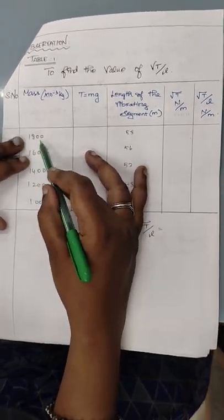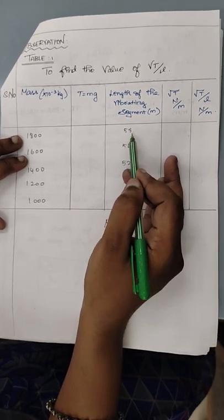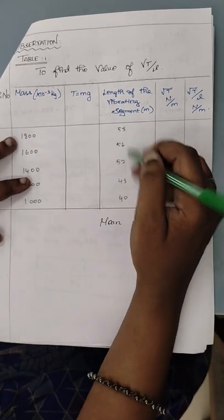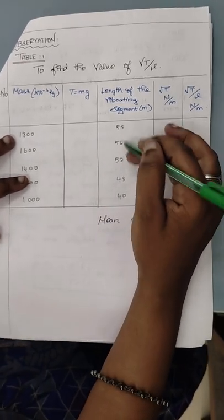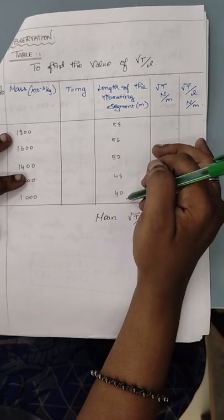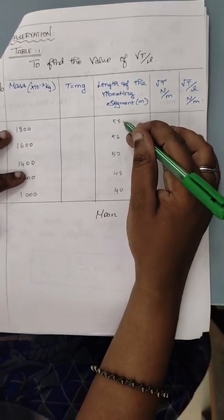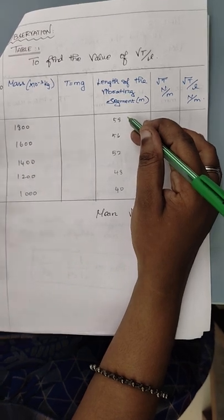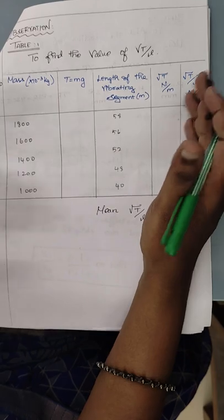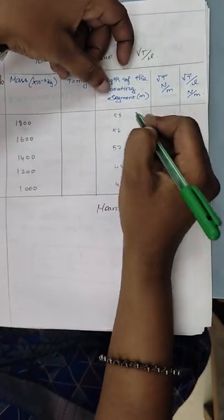I have put 1800 and I obtained 58 as a vibrating length. So actually this is, this won't be in a round value, I just took it randomly around 58, 56, 52, 48 and 40. It might be 58.2 or 57.9, so you need to note the exact value. For calculation tokens, I have to go like this.